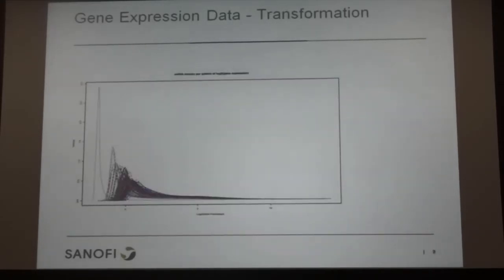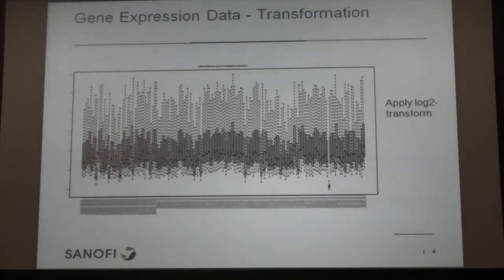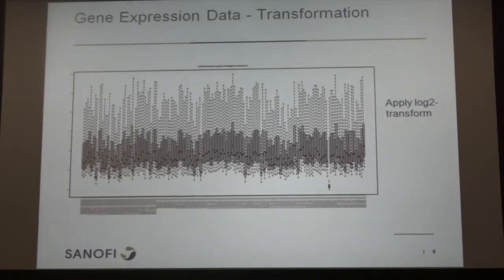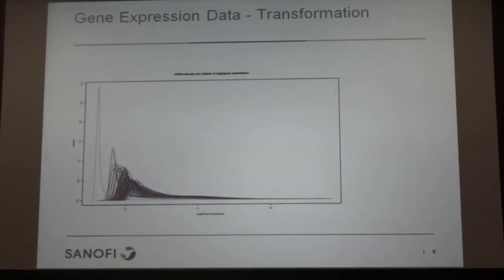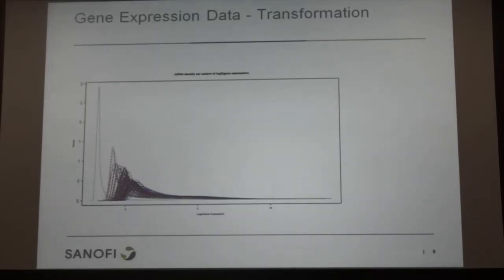As statisticians we have a lot of tools — one is transformation. We just do a log-two transformation, and then the data looks more like a symmetric normal distribution. Looking at the density plot after transformation, it looks more comprehensible. But you also see one subject that is very different from the rest, suggesting it might be an outlier.